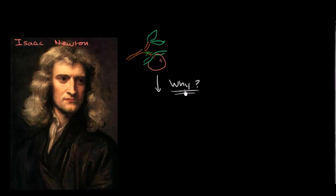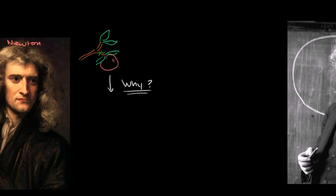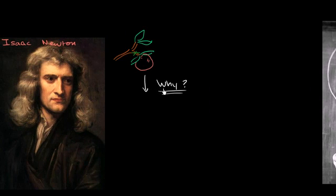That question took him down an entire line of reasoning that set up the basis for all of classical mechanics, which for the most part we still use today. It's been tweaked by Einstein in the last hundred years, but for most purposes when we're engineering things or dealing with things on the surface of the planet, we can still use the mathematics that Isaac Newton came up with. He formulated the universal law of gravitation.